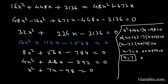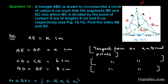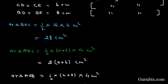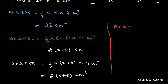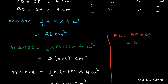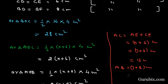Factorizing gives X equals 7 or X equals minus 14. Since distance cannot be negative, X is not equal to minus 14, so X equals 7. Therefore AC equals AE plus CE equals 7 plus 6 equals 13 centimeters, and AB equals AF plus BF equals 7 plus 8 equals 15 centimeters. This is the solution to the question. Thank you.